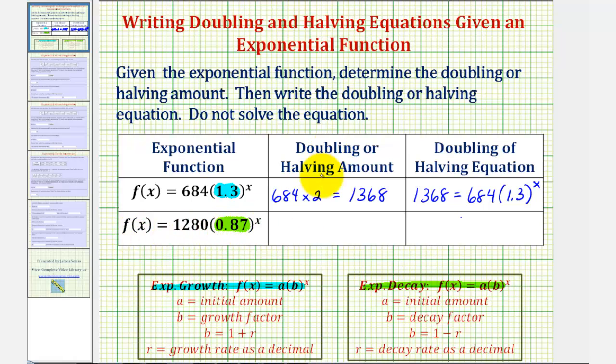Now for the exponential decay function, we'll be finding the halving amount, which would be half the amount of the initial value, where the initial value here is 1,280.